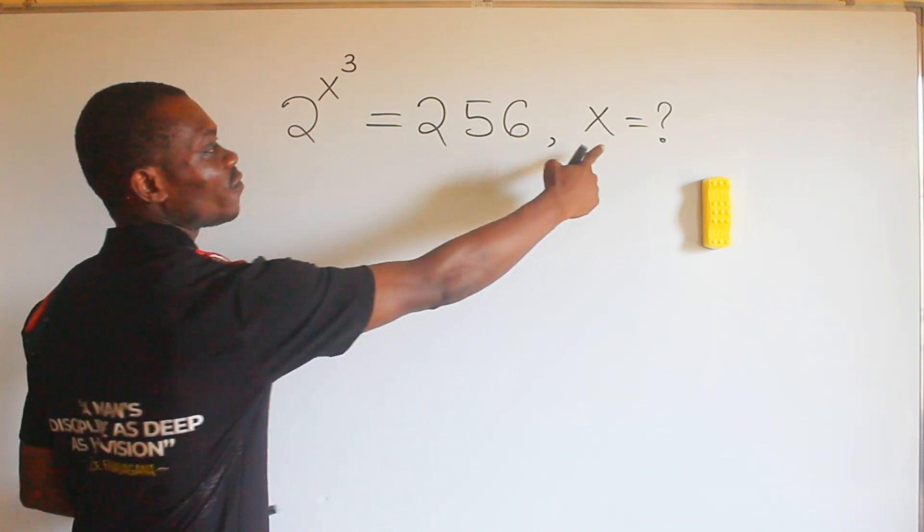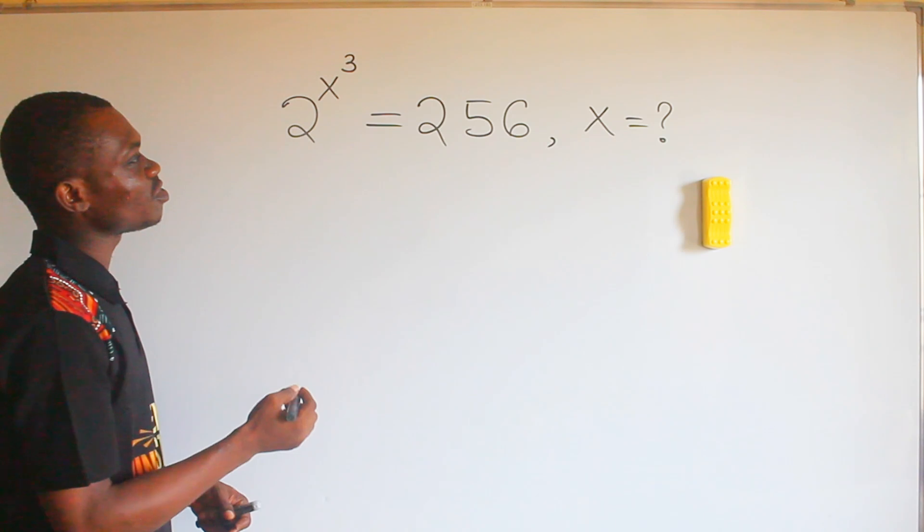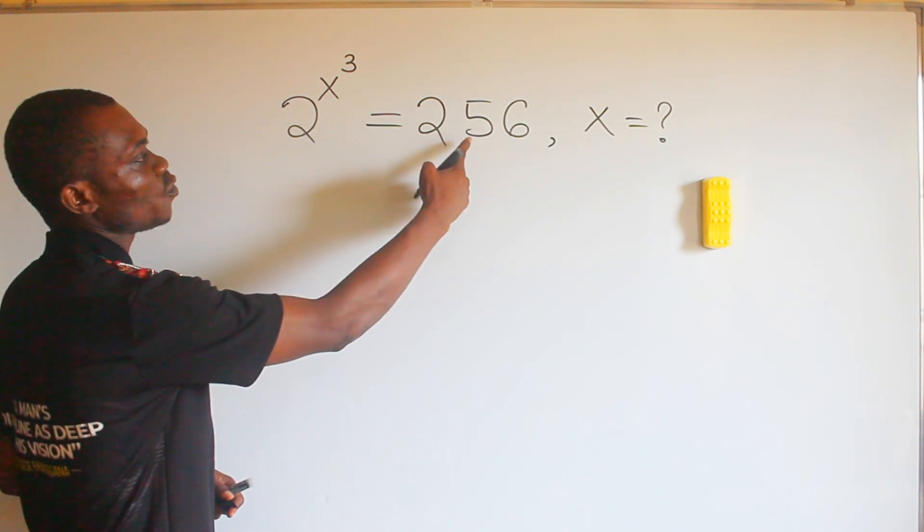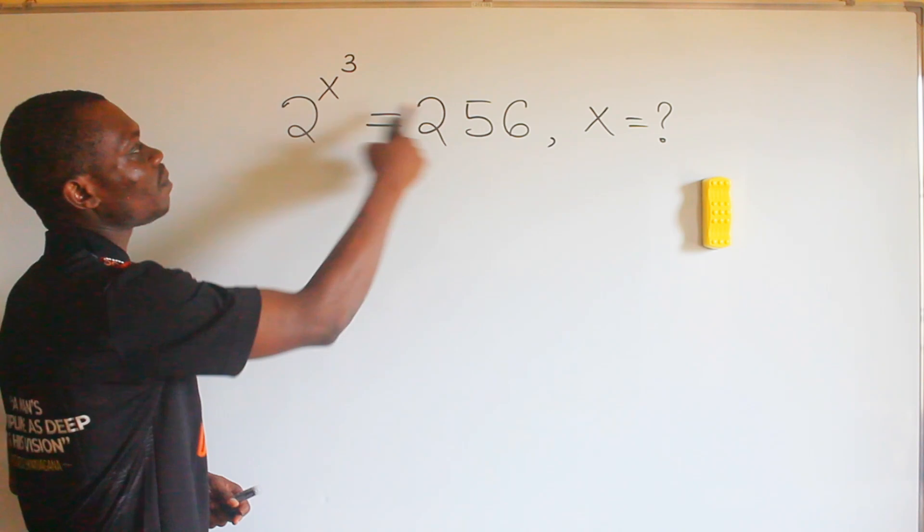So this is from indices. All he's asking you to do is to look for a way to express this to be in base 2, and whatever is the power will be equal to x raised to the power of 3.